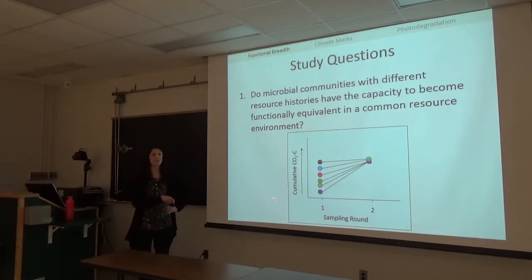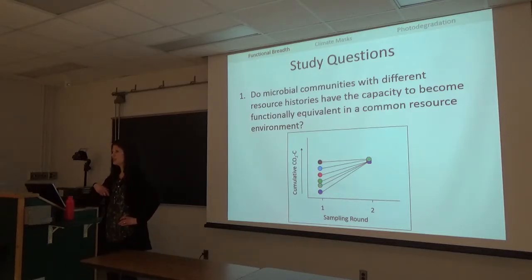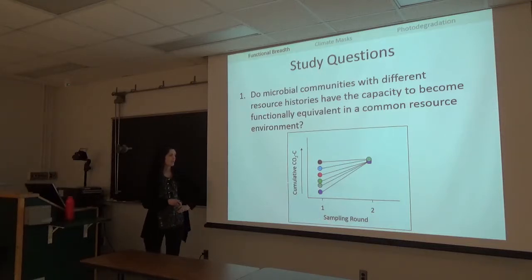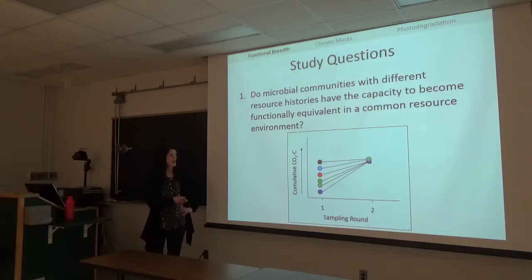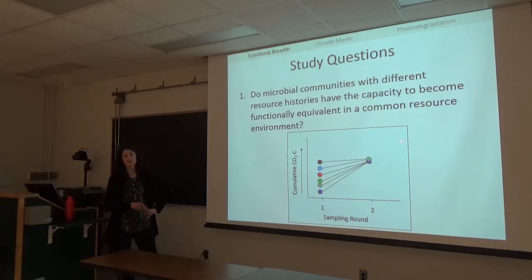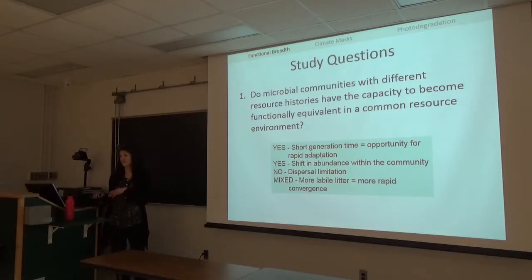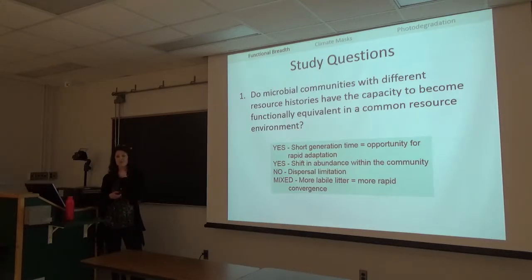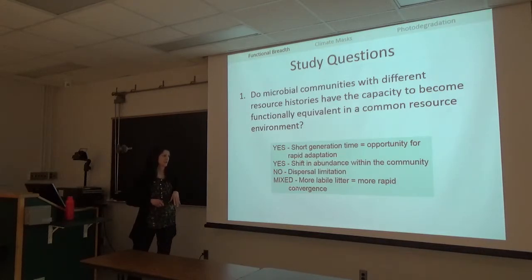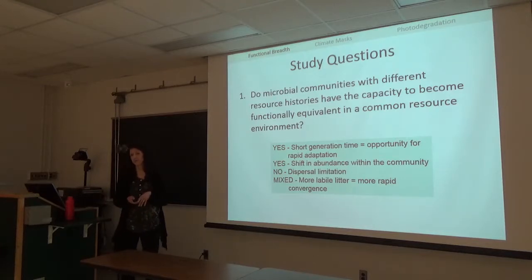In this example diagram, each circle is a different soil microbial community placed on a leaf to watch decomposition over 100 days. After a round, we might see very distinct functional differences in how communities process that leaf. They would be equivalent if they all came together and processed the litter at the same rate—possible through rapid adaptation given microbes' short generation times, or through shifts in community abundance. Or we might see no response due to limited dispersal opportunity in a lab setting, or a mixed response depending on litter chemical recalcitrance.